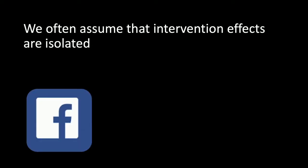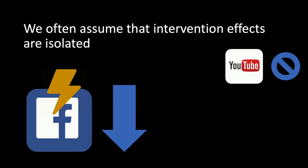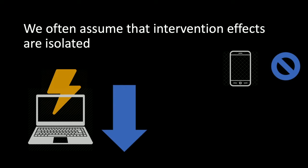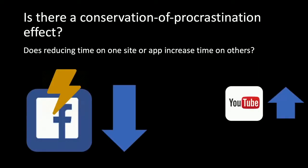We often assume that interventions are isolated — if we have an intervention acting on Facebook resulting in a decline in time there, we assume other sites like YouTube are unaffected. Similarly, we assume that interventions on one device don't affect time on other devices. But we pose the question: maybe that time saved on one site is just being shifted elsewhere. The theoretical intuition is that we have a limited supply of willpower and need breaks and downtime — so if an intervention prevents you from getting that break, maybe you'll go elsewhere. This leads to the hypothesis of a 'conservation of procrastination' effect: reducing time on Facebook might increase time on YouTube because you didn't get your fix.